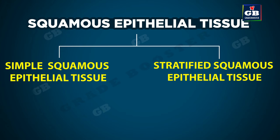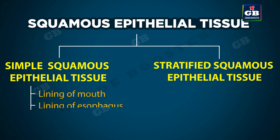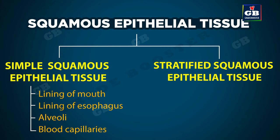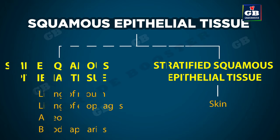Examples of simple squamous epithelial tissue are the lining of mouth, lining of esophagus, alveoli, and blood capillaries. Examples of stratified squamous epithelial tissue include skin. This is about squamous epithelial tissue.